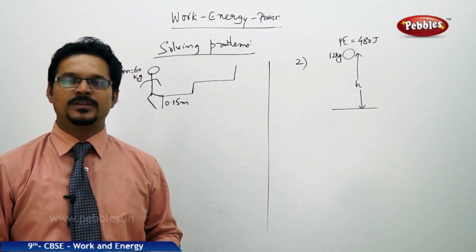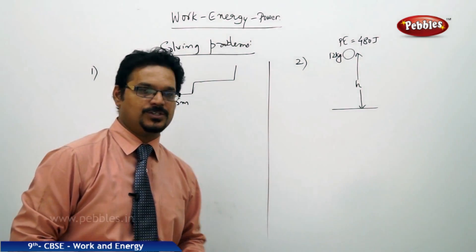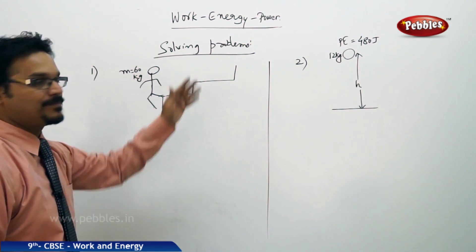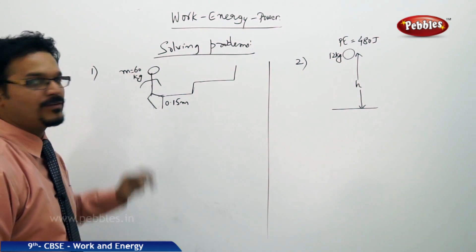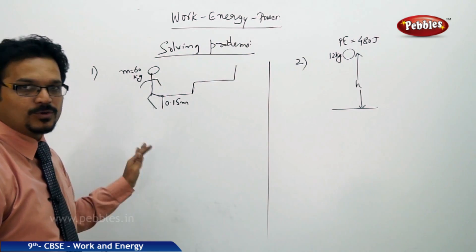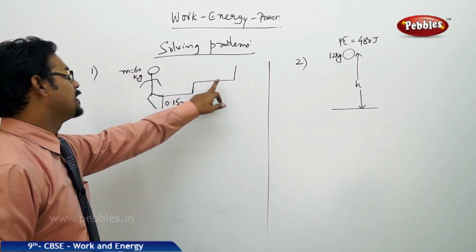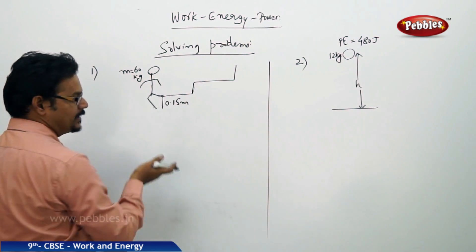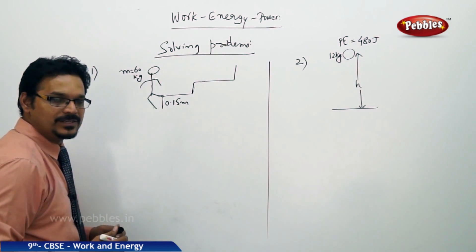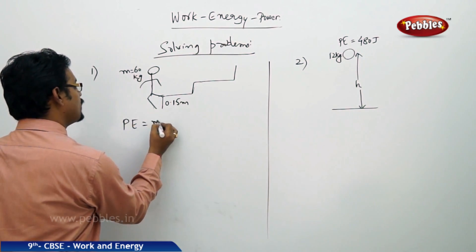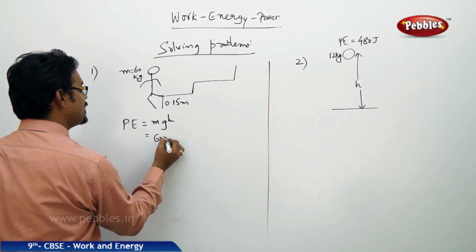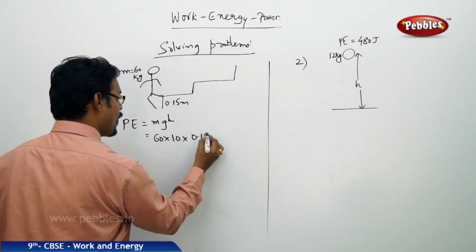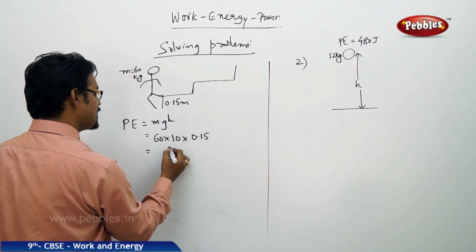Now let us solve some problems based on potential energy formula mgh. The first one: there is a person of mass 60 kg who wants to climb up steps, each step height is 0.15 meters. What is the total energy required to go to the second step? As moving upward is potential energy because going against gravity, PE equals mgh, so mass is 60, g is 10, height is 0.15. So 90 joules is the answer.